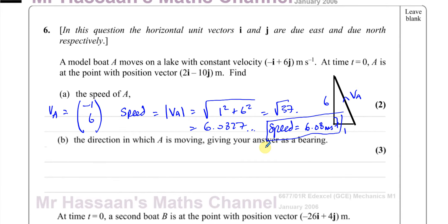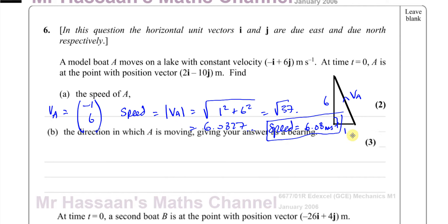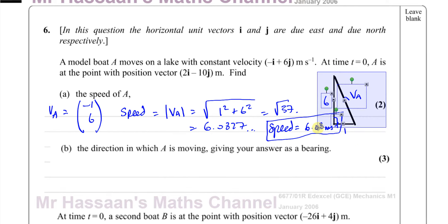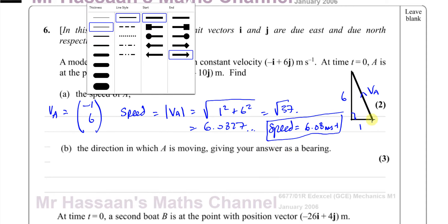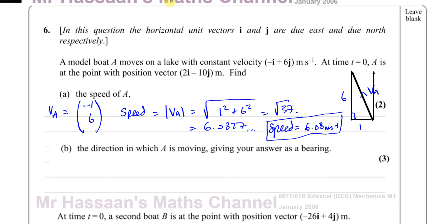Part B asks for the direction in which A is moving, giving the answer as a bearing. The boat is moving one unit west and six units north. Bearings are always measured from the north line and always in the clockwise direction. I'll draw the north line going straight up, and find the whole angle between north and the direction of travel.